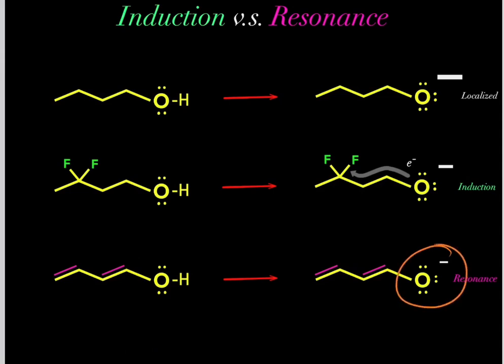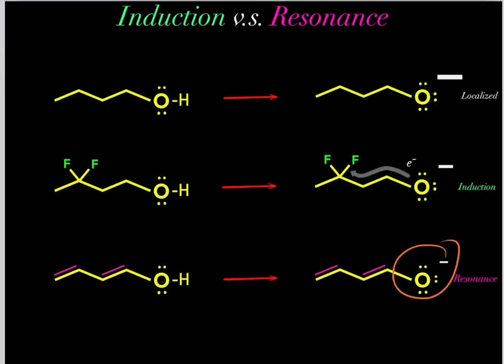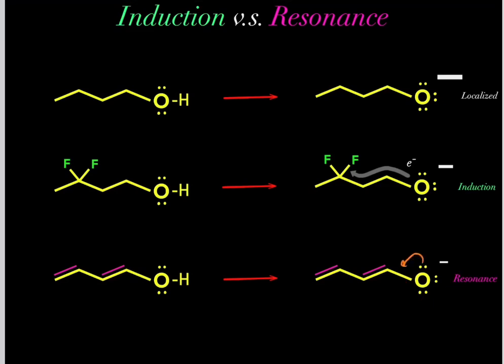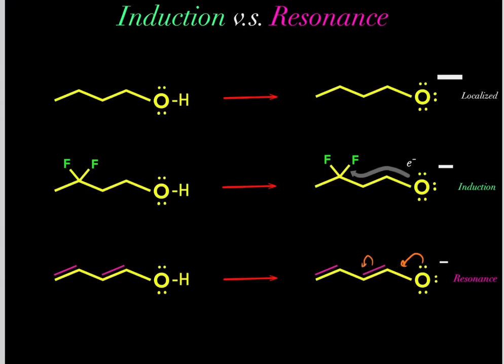What about the third oxygen — why is it the most stable? It also has a formal charge of negative one. However, this oxygen can go through resonance, where these lone pairs of electrons form a double bond. When we do that, these pi electrons fall onto the adjacent carbon, so instead of the negative charge being on the oxygen, after resonance the negative charge is on this carbon.